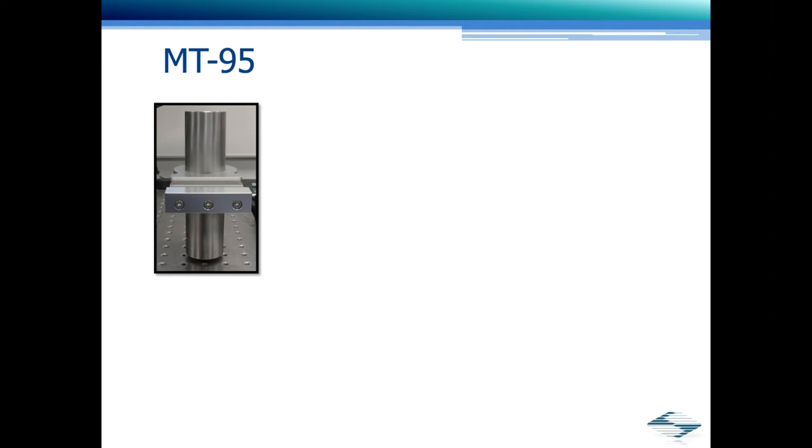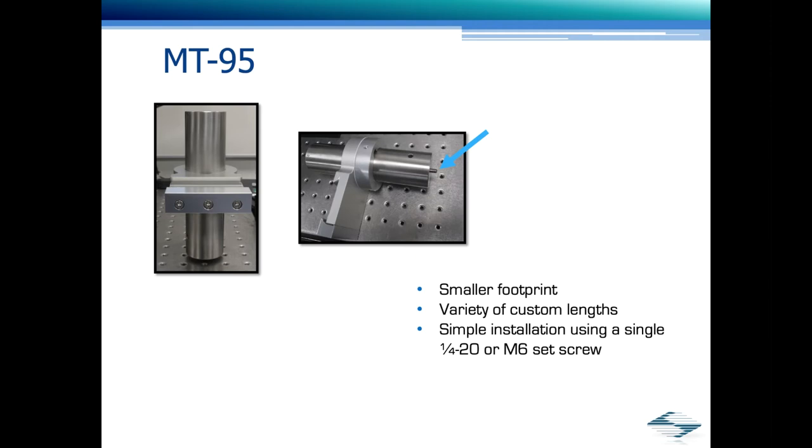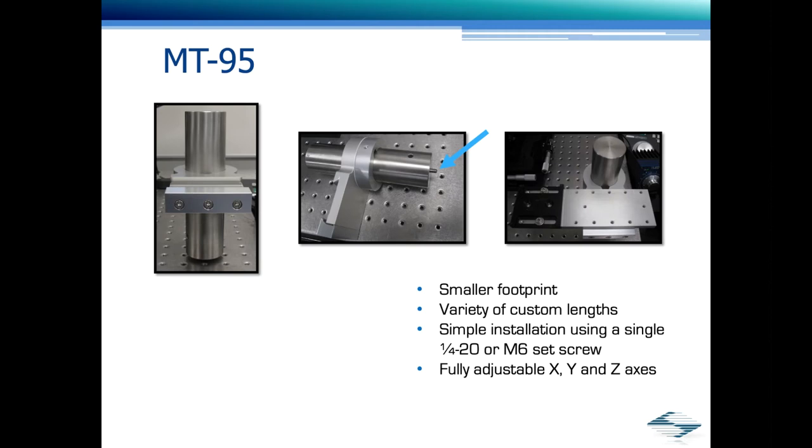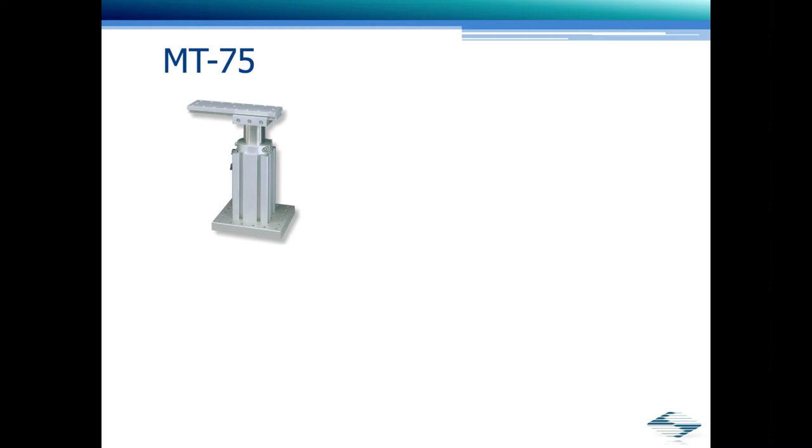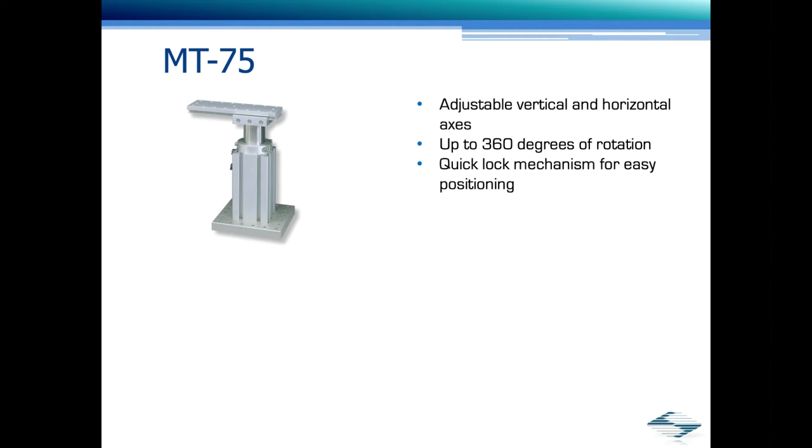In this configuration, we used our newest MT95 stands. As you can see, they are different than our classic stands, but provide the same stable support in a smaller footprint. Variety of custom lengths are available. Simple installation using a single quarter 20 or M6 set screw, which directly mounts into the table. Fully adjustable X, Y, and Z axis. The X axis uses our standard dovetail gantry for greater flexibility. The MT75 was also used in this configuration to hold the chamber column. The MT75 has adjustable vertical and horizontal axes. Up to 360 degrees of rotation. Quick lock mechanism for easy positioning. Solid construction provides stable mounting.